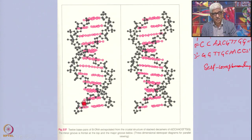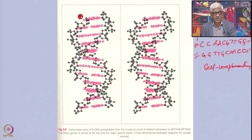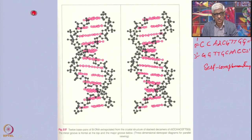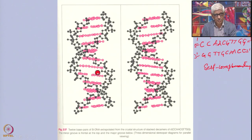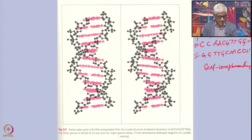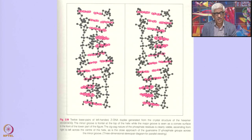With 10 base pairs per turn and a unit rise of 3.4 angstroms, one complete turn of B-DNA is about 34 angstroms — this is what was used earlier for calculations of the total length of the DNA. In the case of RNA, the rise is slightly smaller and the number of units per turn is given similarly.